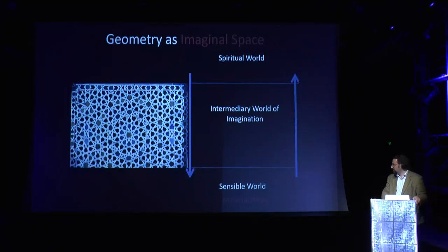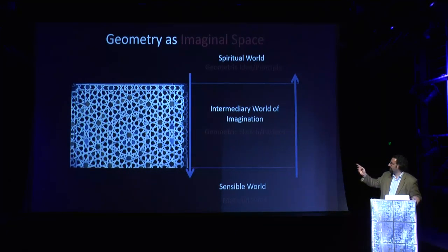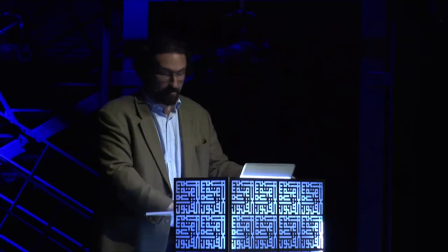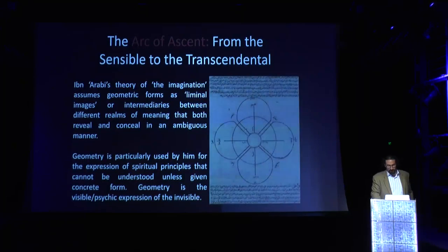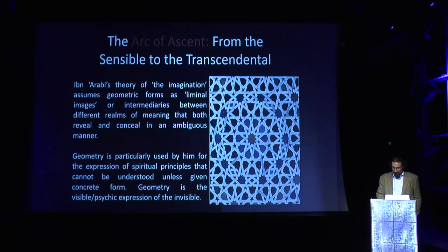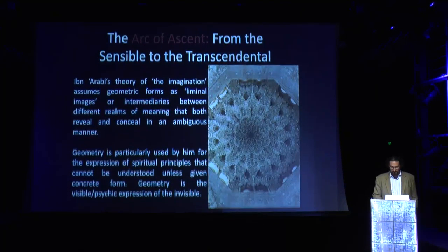We perceive the material work with our physical senses, but we perceive the geometry itself at the level of imagination — in the psychic or imaginal space. Contemplating it long enough, we might arrive at the abstract or formless principle underlying it. Ibn Arabi uses geometry particularly to express spiritual principles. Contemplating a star pattern long enough, for example, the star in the middle relates to the points on the circumference in a particular way, and he uses the image of the circle to explain the relationship between the divine center and the periphery.